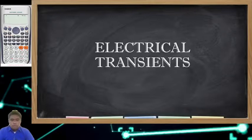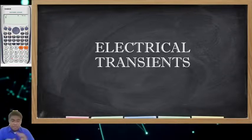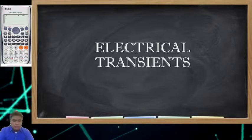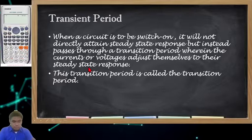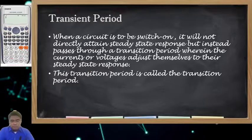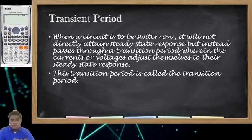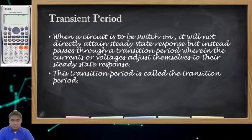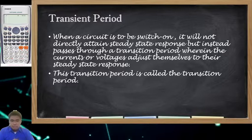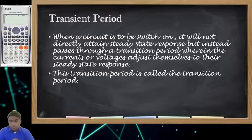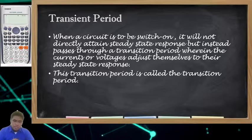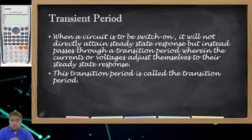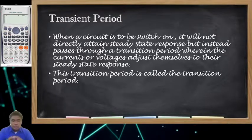We'll be discussing electrical transients. We have here a definition of a transition period. When a circuit is switched on, it will not directly attain steady state response but instead passes through a transition period wherein the currents or voltages adjust themselves to their steady state response. This transition period is what we call the transition period.